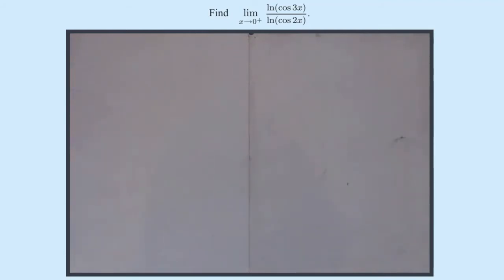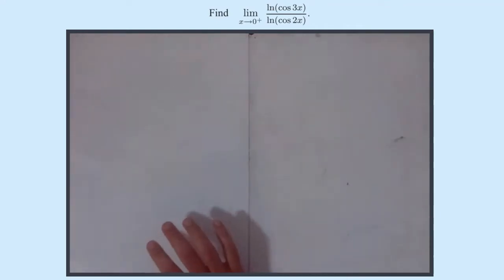Find the limit as x approaches 0 from the right, so from a positive direction, of ln(cos 3x) over ln(cos 2x).